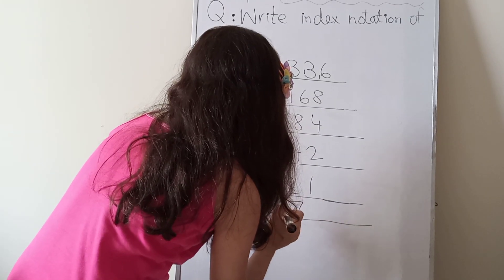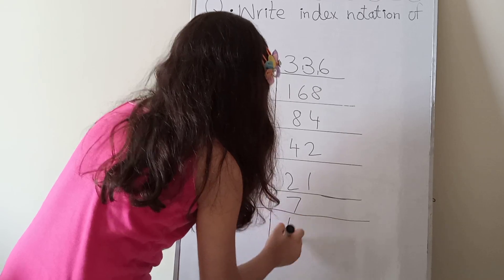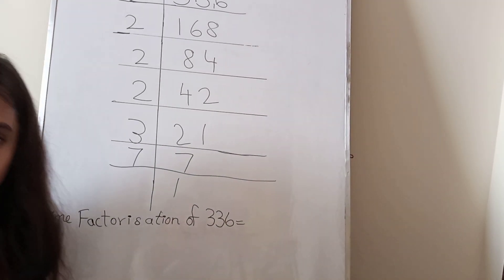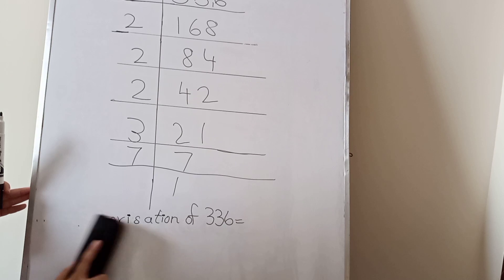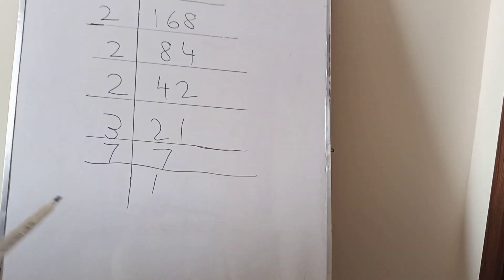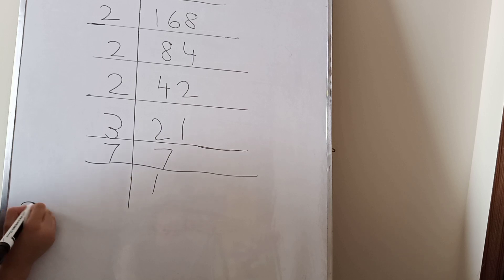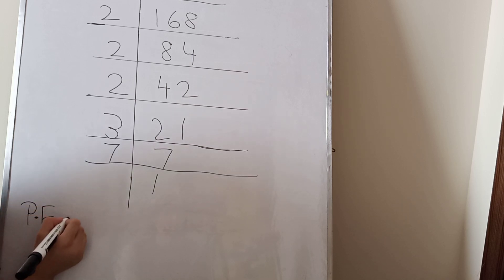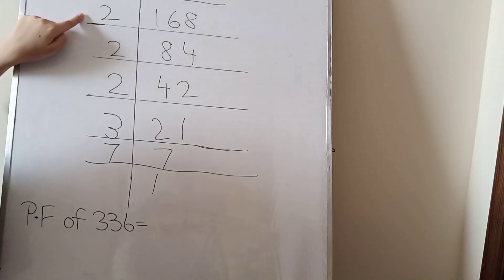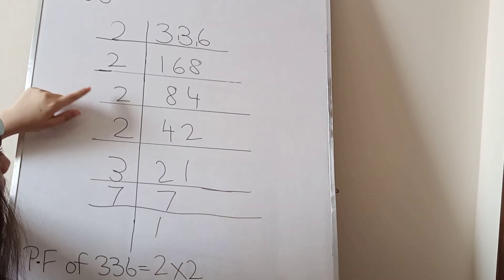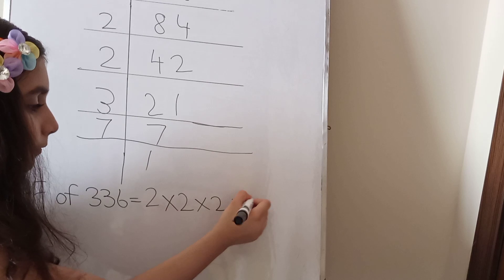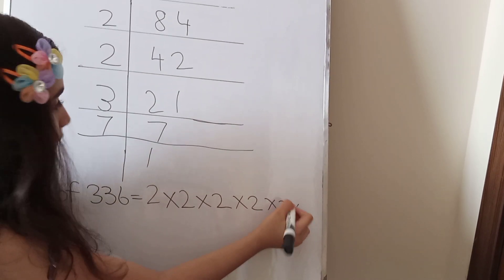Three sevens are twenty-one, seven ones are seven. Now the prime factorization of 336 — here are both long and short forms. I will take the short form. The prime factorization short form is: p.f. of 336 = 2 × 2 × 2 × 2 × 2 × 2 × 3 × 7.